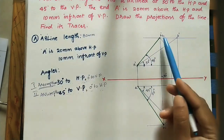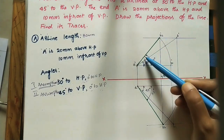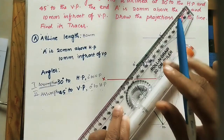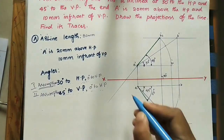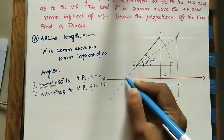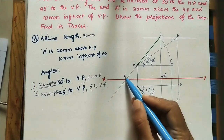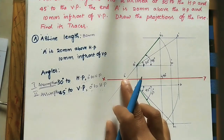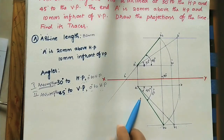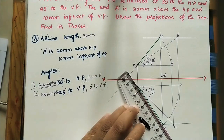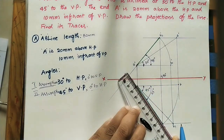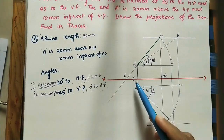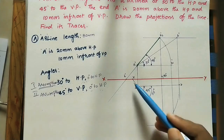Now find the traces. Extend the final front view until it meets the XY line — that intersection point is the horizontal trace, marked as h-dash. Similarly, extend the final top view until it meets the XY line — that intersection point is the vertical trace, marked as small v.